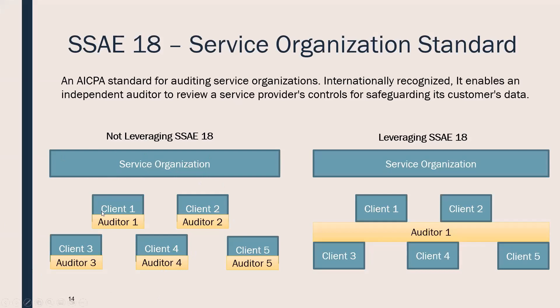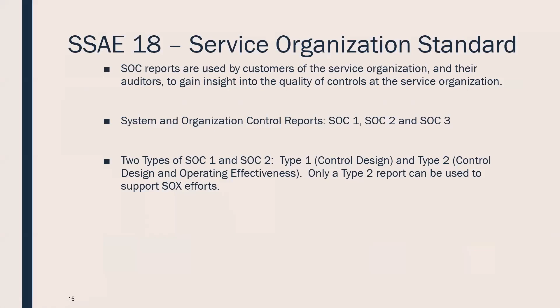Customers of ADP have the option to come and audit ADP individually to support their own audit. But if all hundreds and thousands of customers did that, ADP would spend the whole year in audits. Instead, ADP can get one SSAE 18 report — they test all the key controls that would support customer financial audits. One auditor tests them and produces one report. When clients come asking for an audit, ADP provides that SOC report. And to clarify: SOX with an X is Sarbanes-Oxley; SOC — System and Organization Controls — is the name of the report issued under SSAE 18.